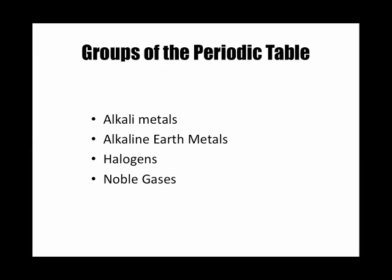Groups of the periodic table. There are four main groups that I want you to know: the alkali metals, alkaline earth metals, halogens, and the noble gases. With your familiarity with the periodic table, you should have one handy throughout the entire chemistry unit. Always have one handy while watching these podcasts.